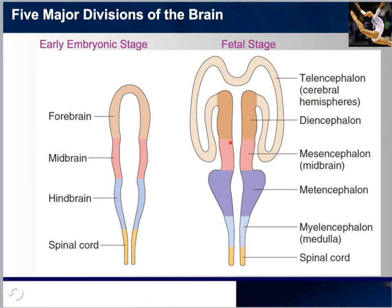When you became a fetus — after week eight — our brain had already been formed to a certain extent. It's not fully developed, but there is a proliferation of cells at a rate of approximately 250,000 neurons per minute. As early as nine weeks, the forebrain became two sections: the diencephalon and the telencephalon. The midbrain became the mesencephalon, and the hindbrain divided into the metencephalon and the myelencephalon.